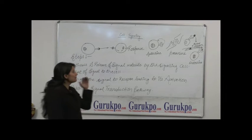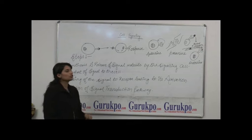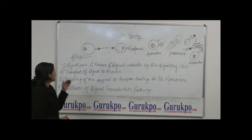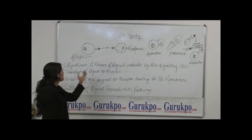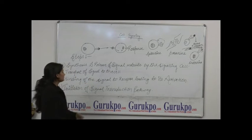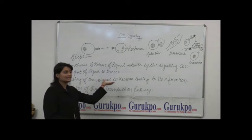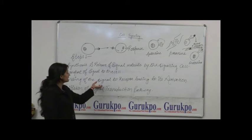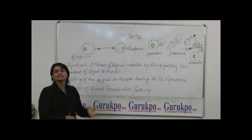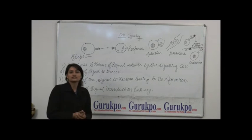Now the steps of cell signaling. First of all, synthesis and release of signal molecule by the signaling cell. Second step, after the signal molecule is released, the transport of signal molecule to the target cell. After the signaling molecule reaches the target cell, it binds to the target cell and then leads to its activation. After that, initiation of signal transduction pathway occurs.